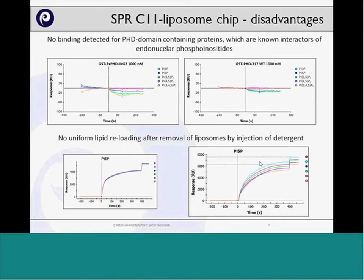That is why we were really interested in collaborating with BioRad and testing this second type of lipid SPR chip, which I'm going to refer to as the MEM layer chip. Here we use the LCT chip, which is a neutravidin-coated gold surface allowing you to capture biotinylated molecules onto the sensor surface, and then use the MEM layer kit to capture your liposomes via DNA hybridization.